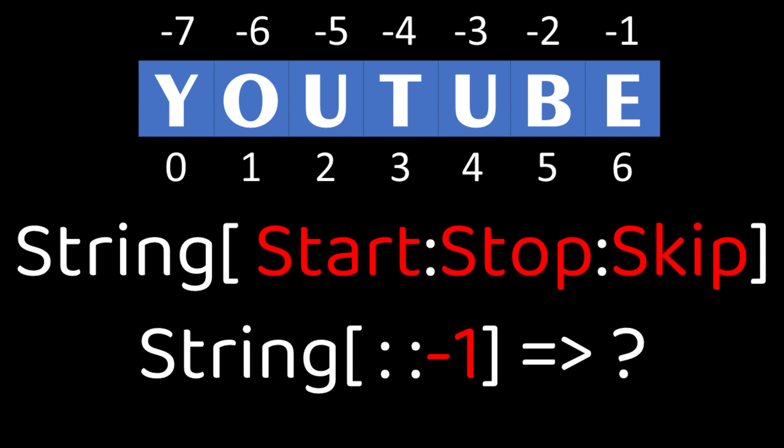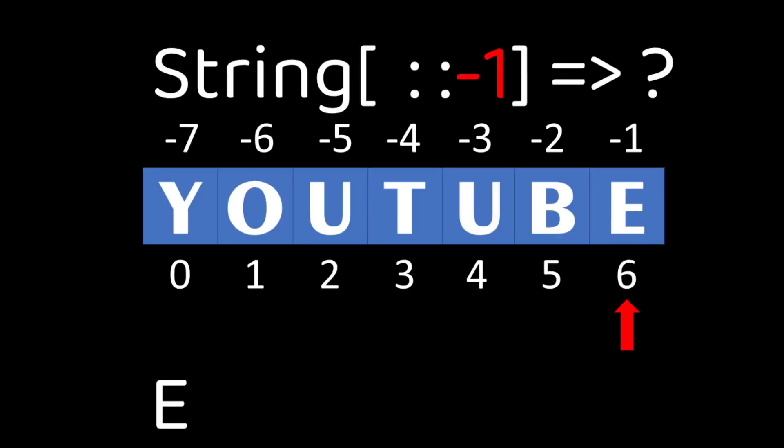Example 3. Start and stop are default that is assigned automatically and skip value is set to minus 1. Hence, now the index is pointed to minus 1, then minus 1 minus 1 which returns minus 2, then minus 2 minus 1 which returns minus 3 and so on. We will get the string in reverse direction.